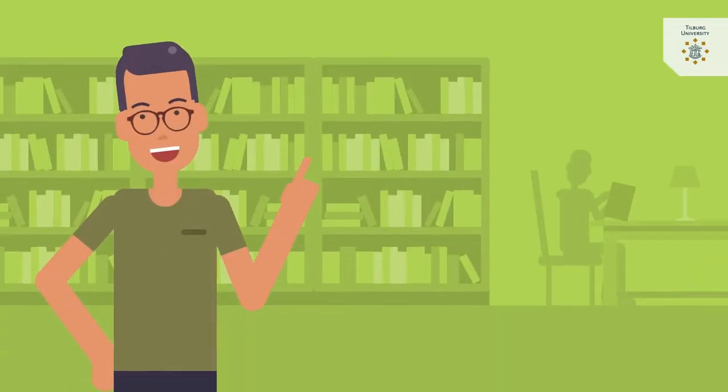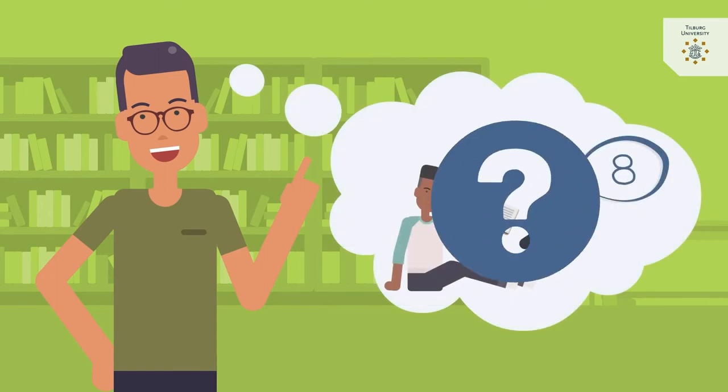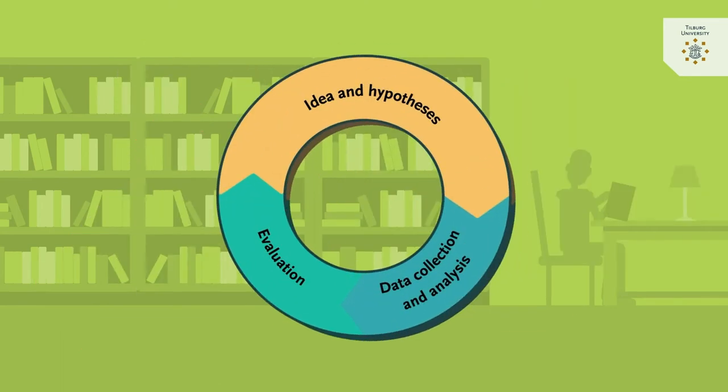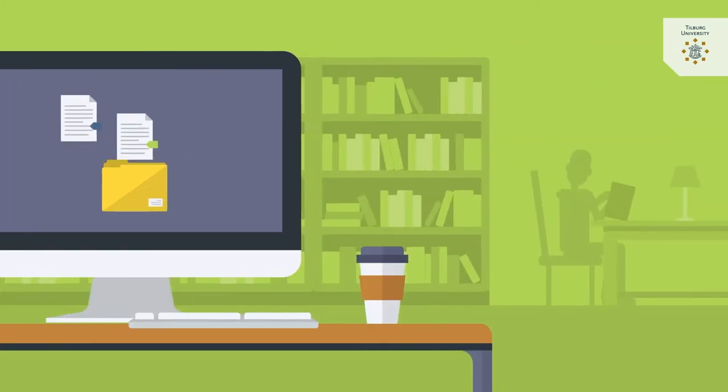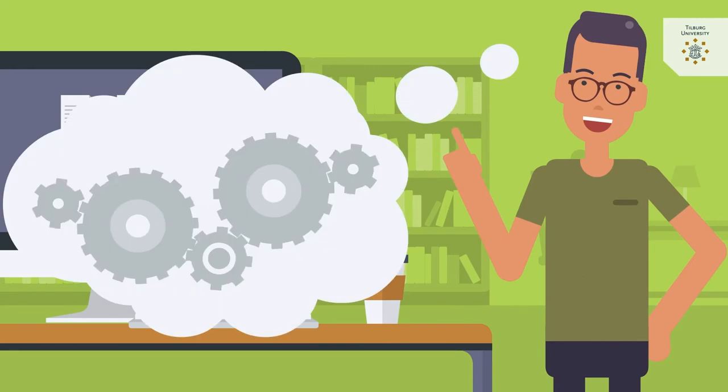You enter the empirical cycle when you have a research idea. This can be anything you find interesting and want to explain. For the first step of the empirical cycle you will read articles and dive into existing literature on this topic so that you can make a prediction.